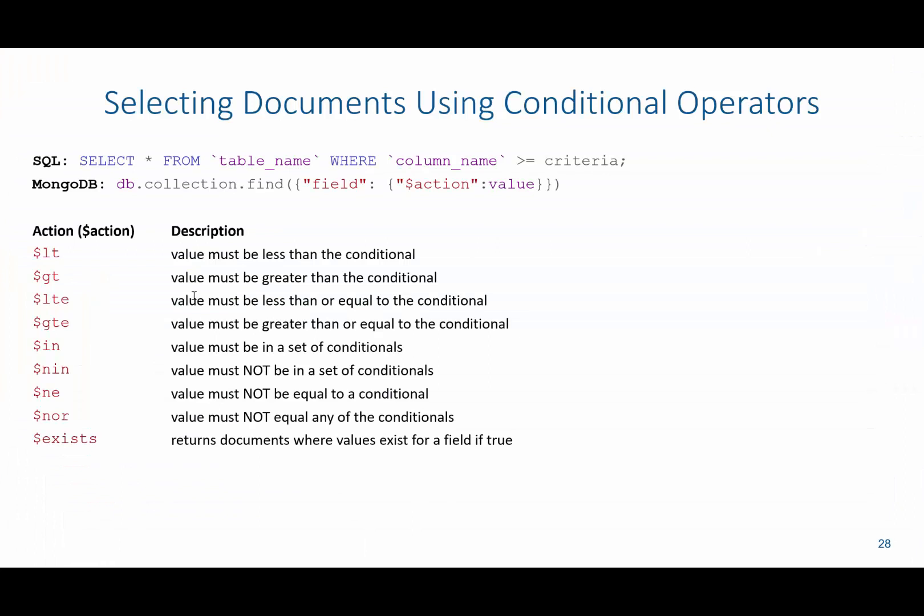We can also select documents using conditional operators. In SQL, that WHERE criteria would include greater than, less than, or equal to, or any other type of criteria. In MongoDB, we'd say db.collection.find, then in that first set of curly brackets specify the field, then a colon, then another set of curly brackets with the specific action and the value to compare against. This action could be less than, greater than, less than or equal to, greater than or equal to, in, not in, not equal to, or exists.